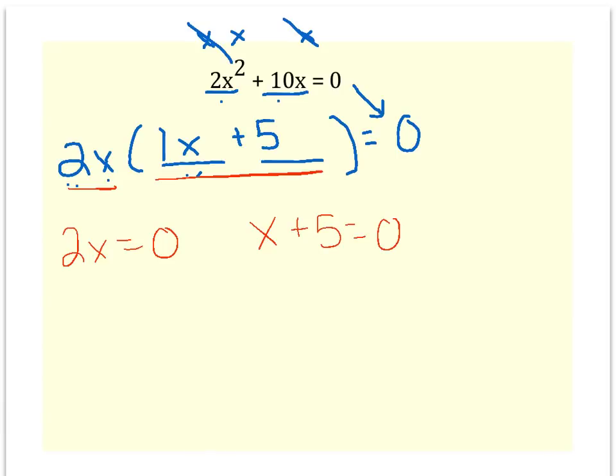2x equals zero. Since the two is multiplying the x, I'll divide both sides by two. Zero divided by anything is always just zero. Subtract 5, subtract 5. X equals negative 5.